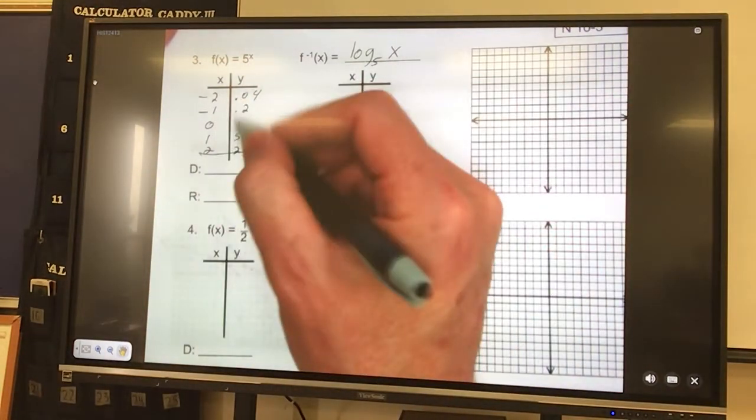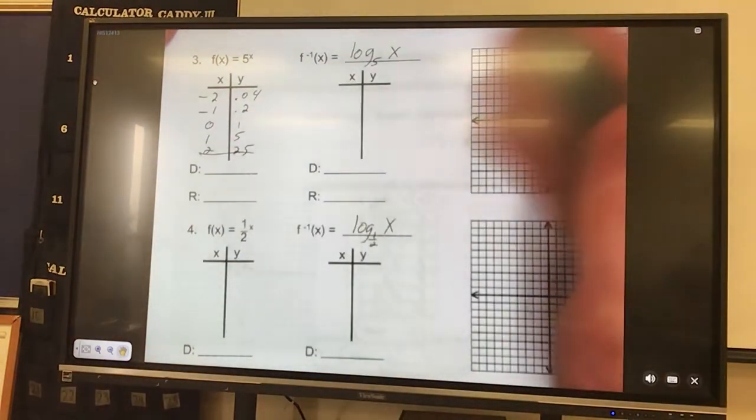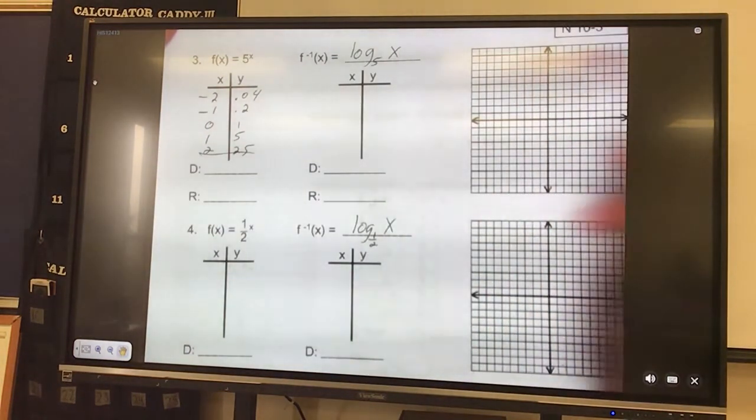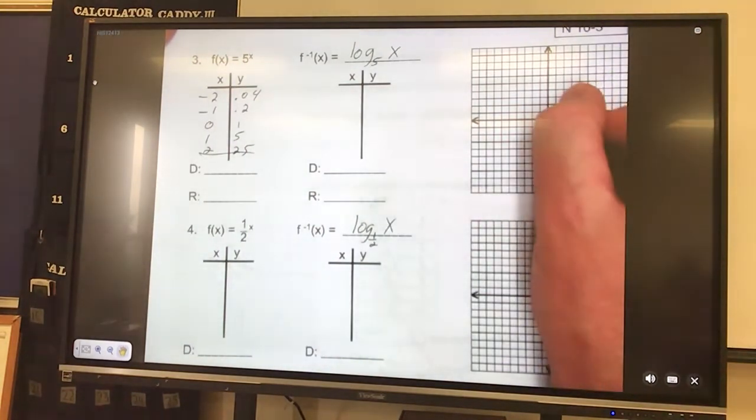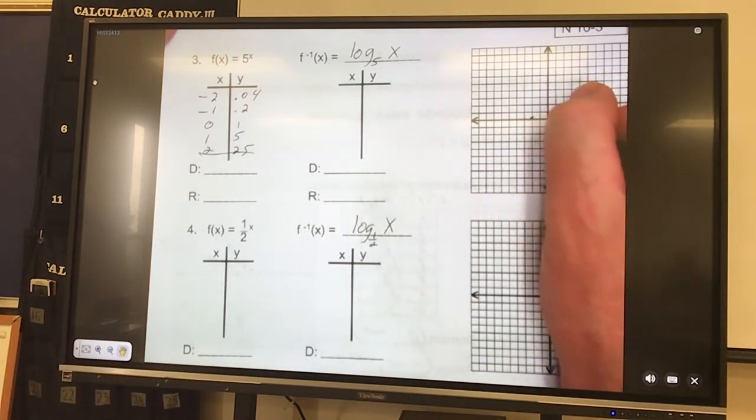Graph it. And we get these points just by, I'm just picking points that make, you can pick any points you want, any of them that work out good that you can graph. All these are graphical points, none of them are errors. So over negative 2 up 0.04. So if you wanted to choose negative 3 you could have. Negative 1 up 0.2, 0, 1, and 1, 5.